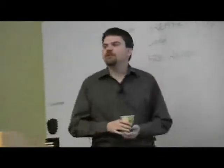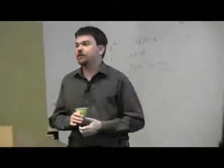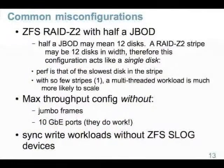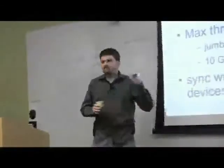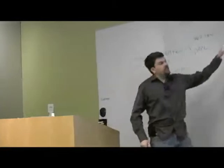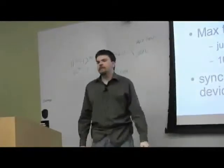Common misconfigurations. I work in the storage, work mostly with the sun storage equipment. And we see this a lot. ZFS RAID-Z2, a double parity RAID, and it's configured on half a JBOD of disks. So half a JBOD of disks, that may be 12 disks. If you configure a double parity RAID stripe across 12 disks, that might be one stripe. Now if that's all you've got in your system, one stripe, and you're accessing it, performance can really suck.